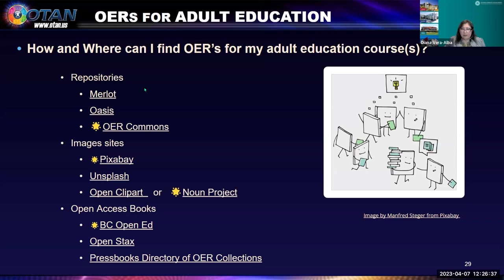There are also image repositories such as Pixabay, Unsplash, Open Clipart, and Noun Project. My go-to is Pixabay — usually I can find what I need there. If not, I'll go to Unsplash or other repositories. For icons, I really like Noun Project.